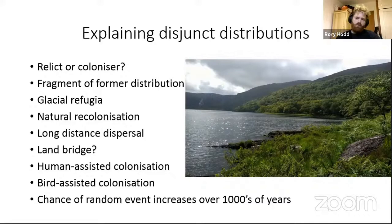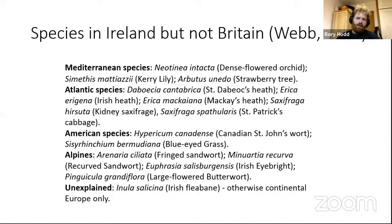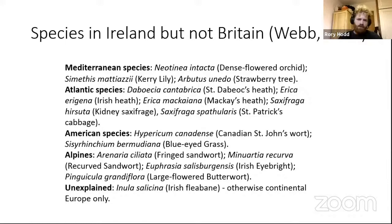Webb identified these species as occurring in Ireland but not in Britain, with a significant gap in their distribution — most actually have a wider gap than just Britain. He identified first the Mediterranean species, including the dense-flowered orchid Neotinea intacta. He included the Kerry lily, strawberry tree, various heathers, saxifrages from the southern Mediterranean-Atlantic species, then a couple of American species, a few alpine or montane species, and then one species that is unexplained.